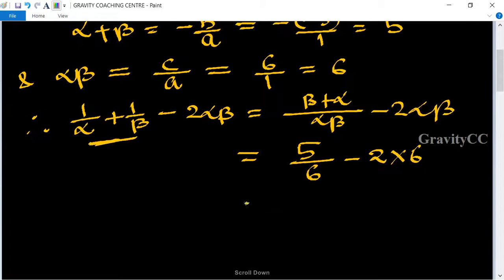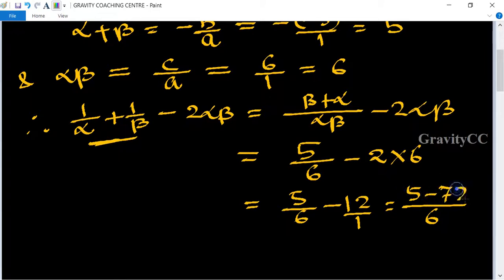This equals 5/6 - 12. Taking the common denominator of 6 and 1: (5 - 72)/6 = -67/6, which is the required answer.